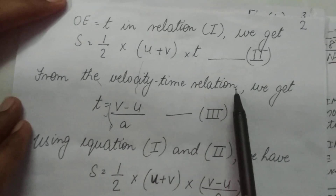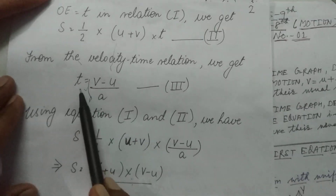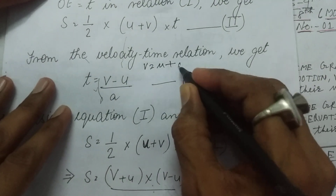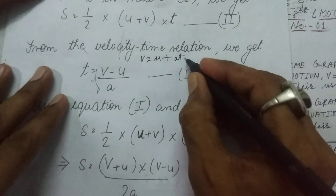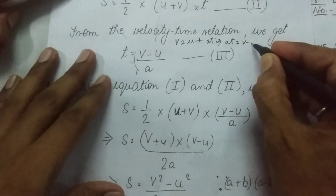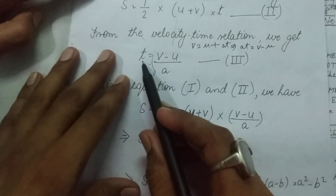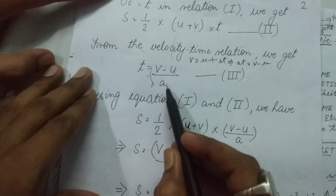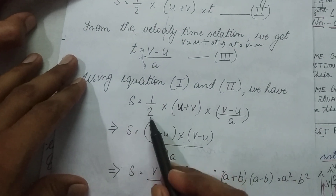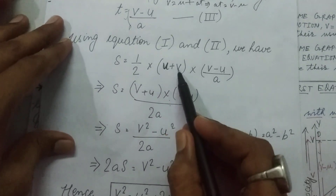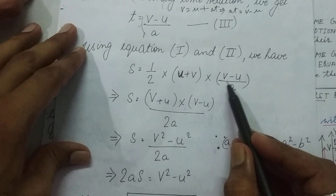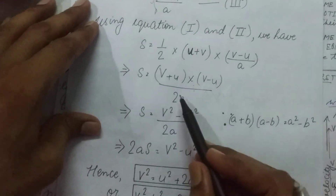From the velocity-time relation we know v = u + at. So T = (v - u) / a. Using this and substituting into the second equation, S equals half into (u + v) into (v - u) / a, which simplifies to S equals (v + u)(v - u) / 2a.